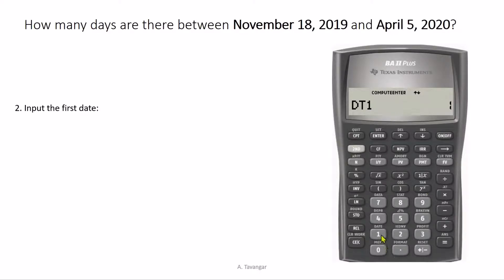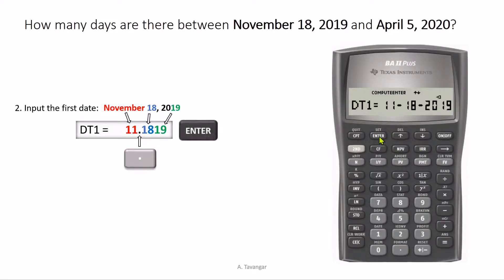therefore we punch in 11 for the month. We separate it with a decimal point. After the decimal point comes the day, which is 18, so one eight. And then after the day comes the year, but the last two digits of the year, in this case 19 for 2019, so one nine. Once we input the numbers, we press enter and then the first date is set.